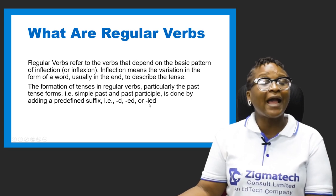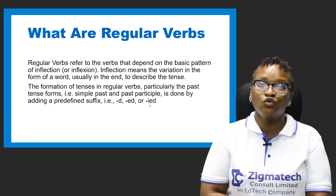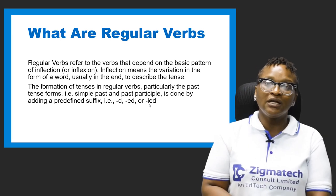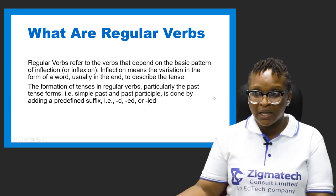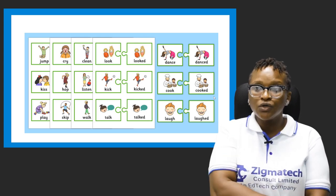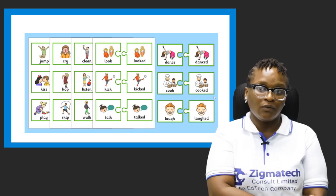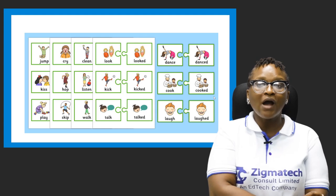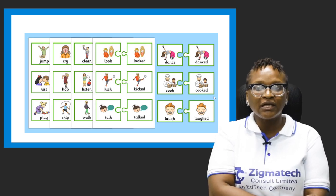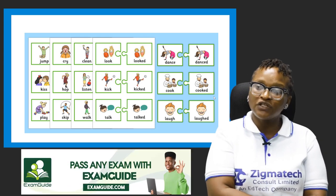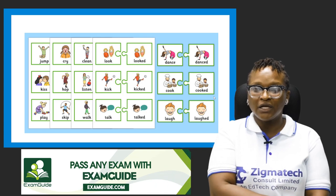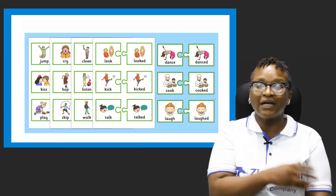The formation of tenses in regular verbs — particularly the past tense forms, that is simple past and past participle — is done by adding a predefined suffix. You add D, you add E-D, or you add I-E-D when there is a word that ends with Y. It is when you have a word that ends with Y that you change the Y to I, because the pronunciation changes and as such affects the spelling. Now this is an example chart on regular verbs.